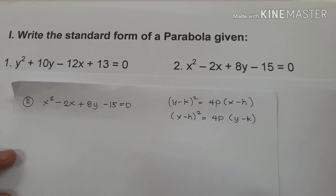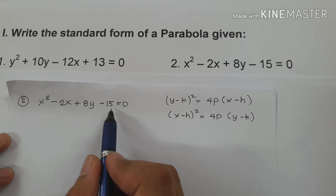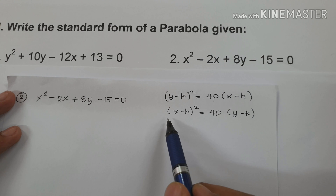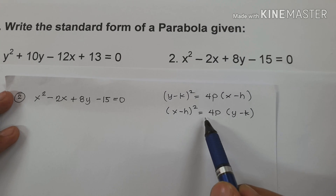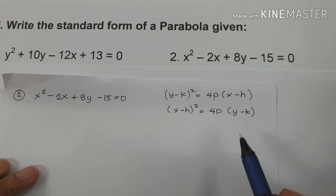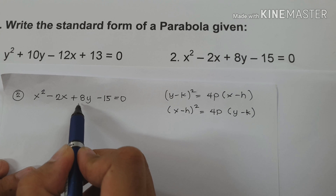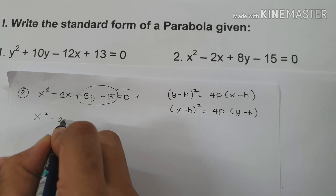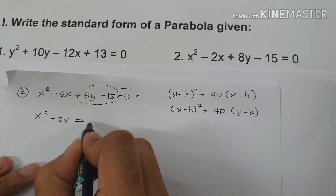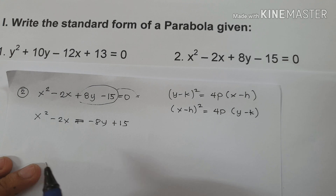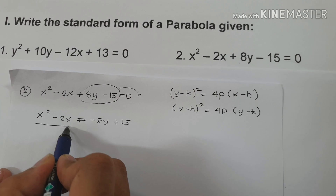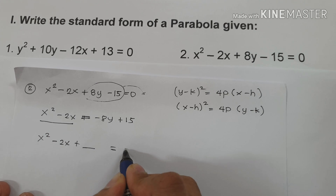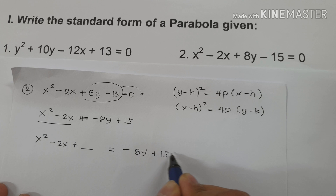For example number two, we have x squared minus 2x plus 8y minus 15 equals zero. We can say the parabola opens upward or downward because of the x squared term, so we use x minus h squared equals 4p times y minus k. We move positive 8y minus 15 to the side of zero, giving us x squared minus 2x equals negative 8y plus 15. Then we set up to complete the square: x squared minus 2x plus blank equals negative 8y plus 15 plus blank.